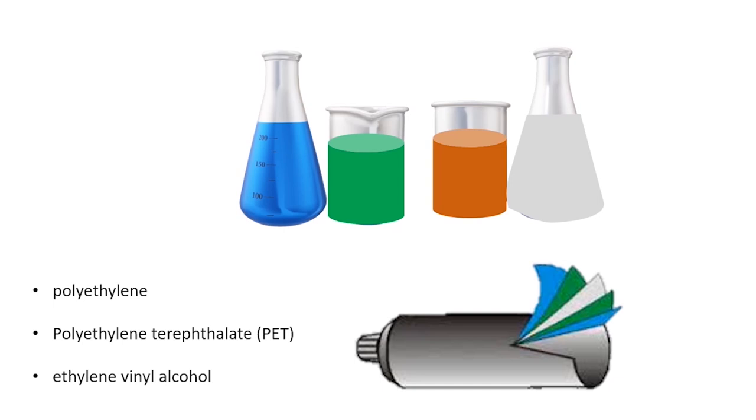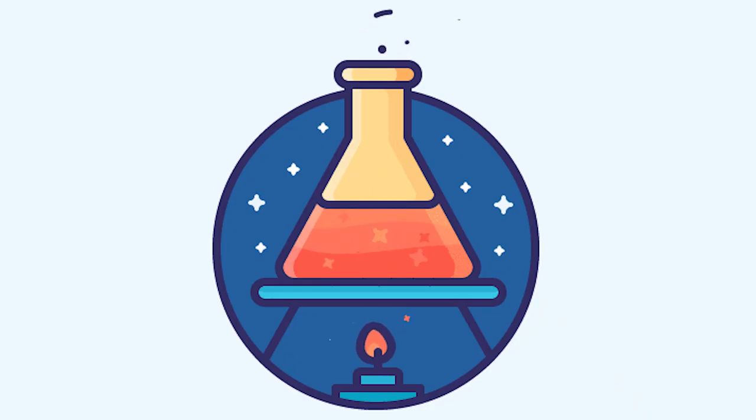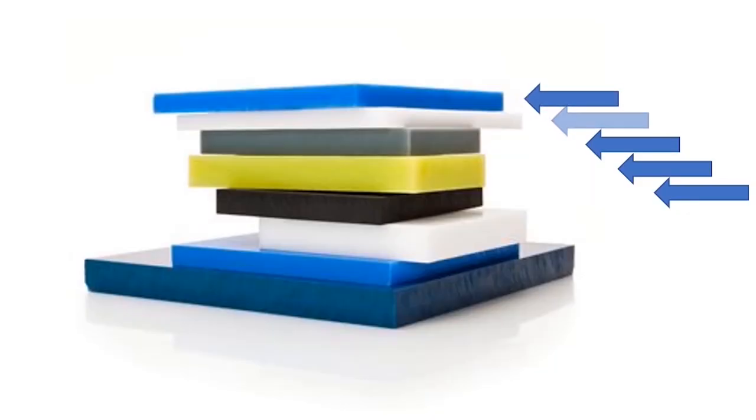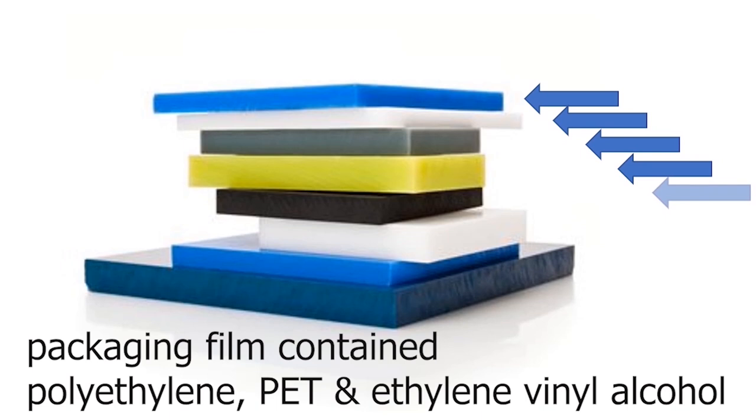Herber and his colleagues designed this strategy. Here the idea is to choose the right solvent to dissolve only one kind of plastic at a time. They tested this technique on a packaging film that contains polyethylene, PET, as well as some amount of ethylene vinyl alcohol that keeps food fresh.